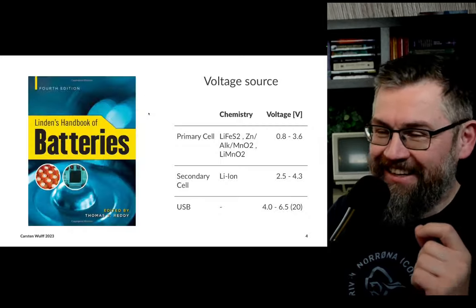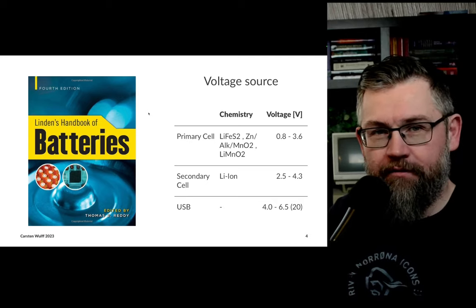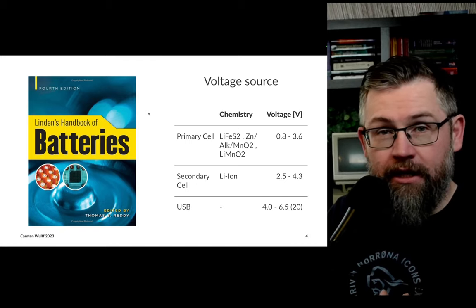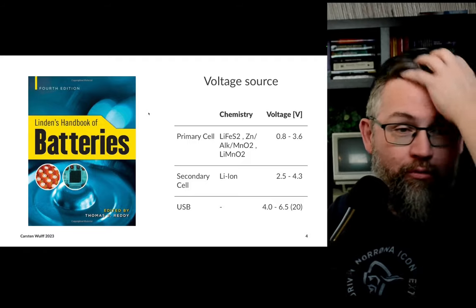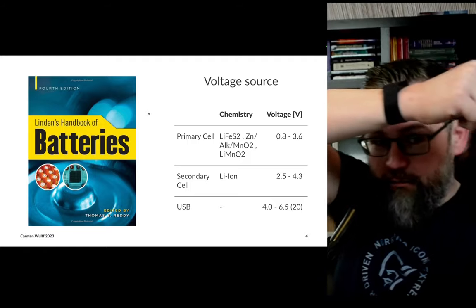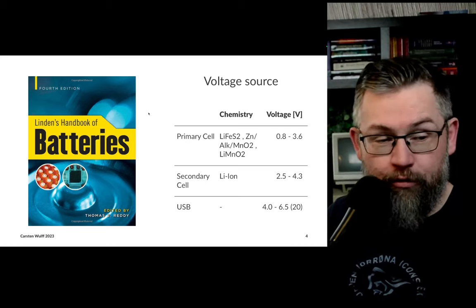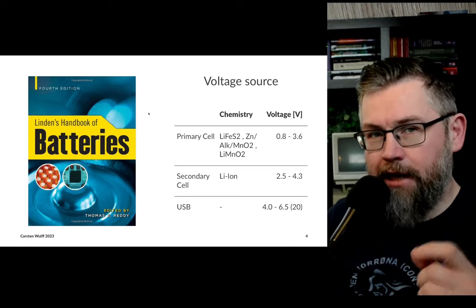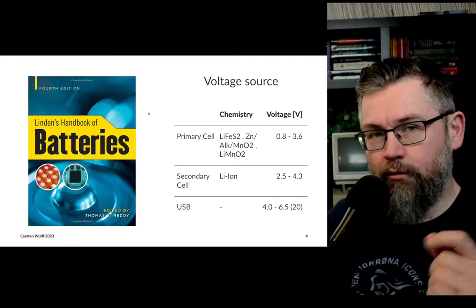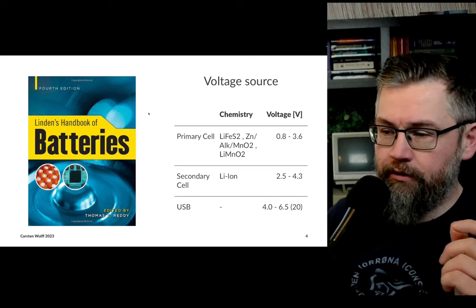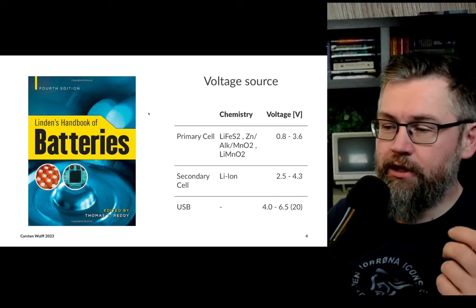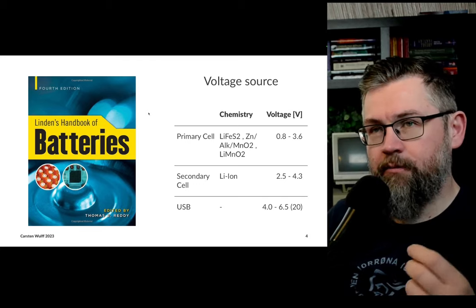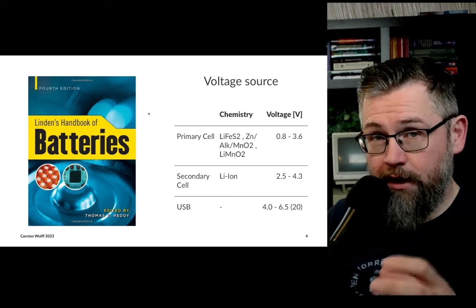Most of the stuff around us when it comes to electronics is powered by batteries — anything you wear, like a wristband, or your computer. It runs on a battery, and it's actually the battery chemistry that determines what the voltage is on the terminals. That's basically given by the difference in Fermi level on the two electrodes.